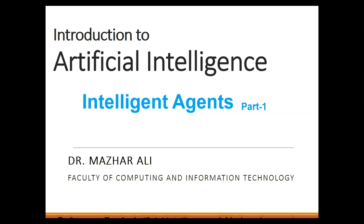In artificial intelligence, an intelligent agent refers to an autonomous entity that directs its activity toward achieving goals using observation through sensors and actuators. Actuators are basically like arms — just as we use arms to do things, robots and intelligent agents use actuators which work on behalf of arms. Intelligent agents may also learn or use knowledge to achieve their goals; they may be very simple or very complex. For example, a thermostat is considered an example of an intelligent agent.